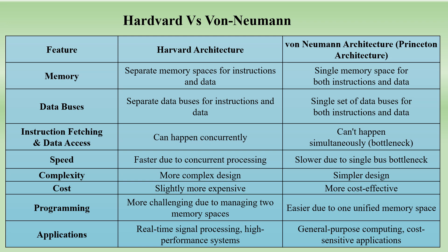Moving on to the differentiation between Harvard and von Neumann architecture, the features compared include memory, data buses, instruction fetching, speed, complexity, cost, programming, and application. Regarding memory: Harvard has separate memory spaces for both data and instruction, while von Neumann has a single memory space. For data buses: Harvard has separate data buses for instruction and data, whereas von Neumann uses one single bus for both.